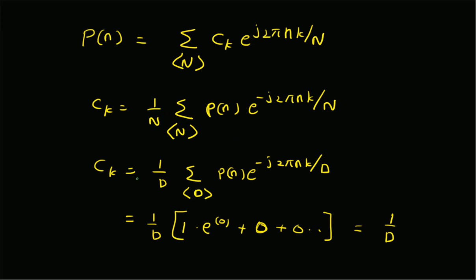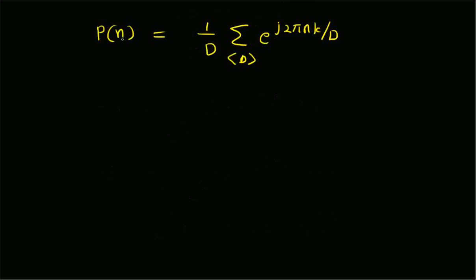Since the period N equals d, c_k equals 1 over d times the summation of p of n times e to the power minus j 2 pi n k over d. Since p of n is 1 only for n equal to 0 and 0 for all other d minus 1 values, the coefficient c_k is simply 1 over d. Therefore the discrete Fourier series of p of n is: p of n equals 1 over d, times the summation of e to the power j 2 pi n k over d, for k from 0 to d minus 1.